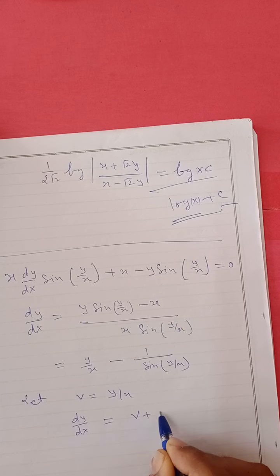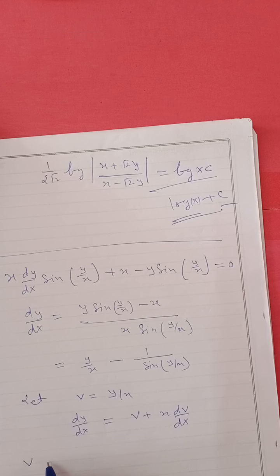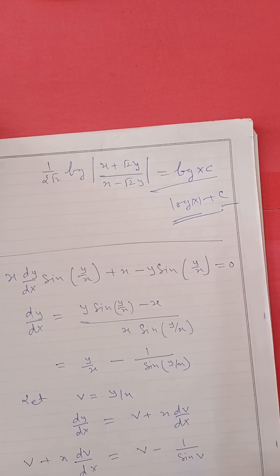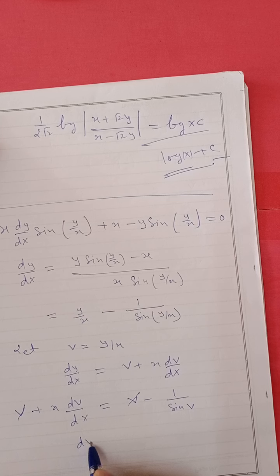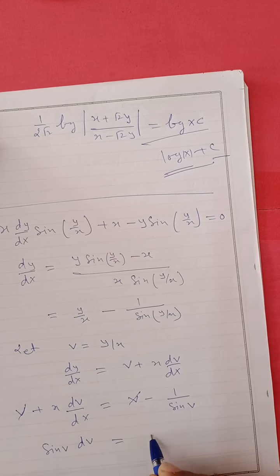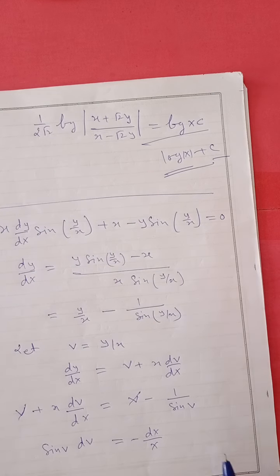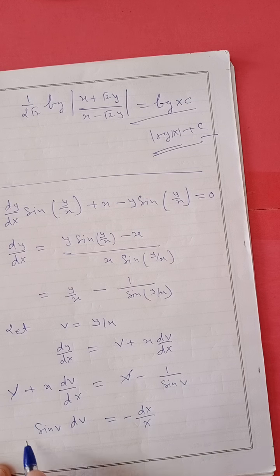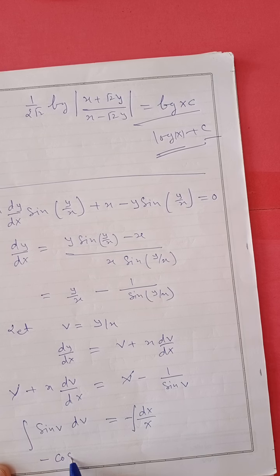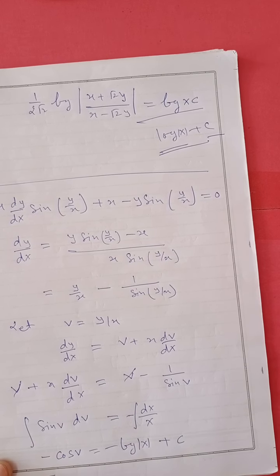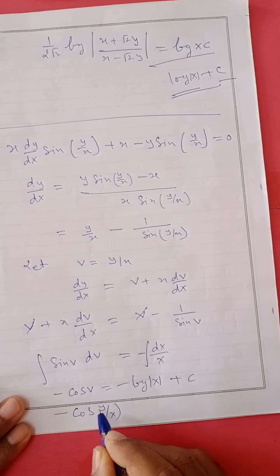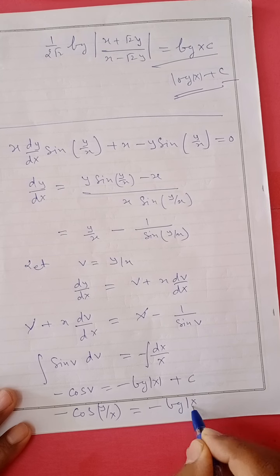वही substitution करना है: v = y/x, differential dy/dx = v + x·dv/dx। तो v + x·dv/dx = v - 1/sin(v)। v से v cancel। dv·sin(v) = -dx/x। Both side integration: -cos v = -log x + c। So: -cos(y/x) - log|x| + c.